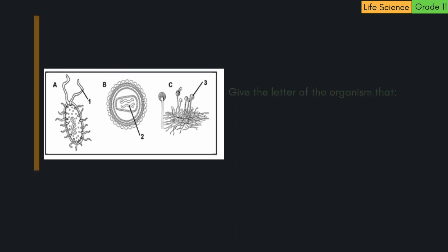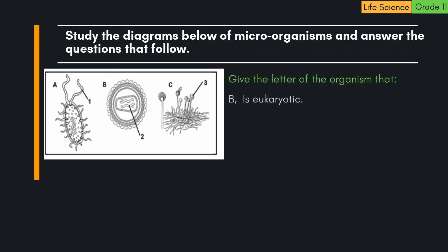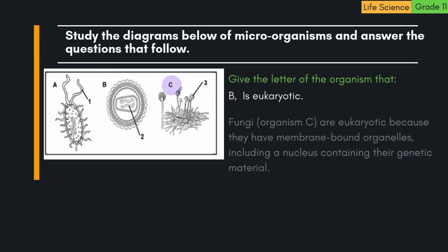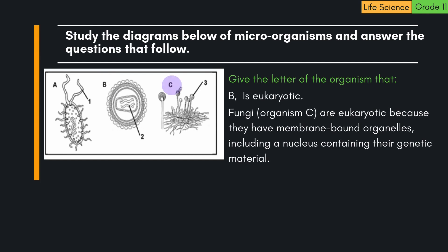B. Is eukaryotic. The correct answer is C. Fungi, organism C, are eukaryotic because they have membrane-bound organelles, including a nucleus containing their genetic material.